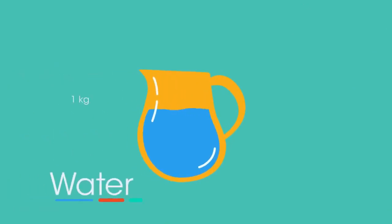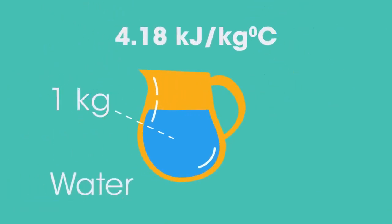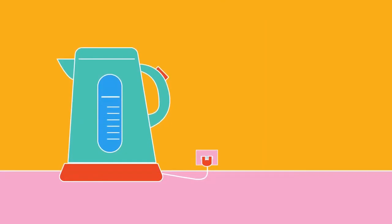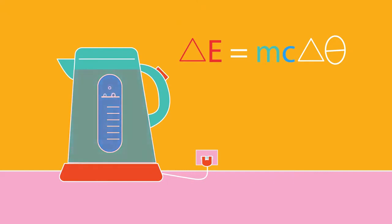Water has a specific heat capacity of 4.18 kilojoules per kilogram per degree Celsius. This means it needs 4.18 kilojoules to heat one kilogram up by one degree Celsius. We can use the equation ΔE = mcΔθ to work out the energy needed to boil a kettle of water. If we take 0.5 kilograms of water, or half a litre, at 18 degrees Celsius and heat it to boiling, or 100 degrees Celsius...